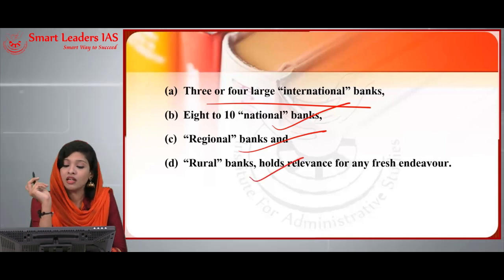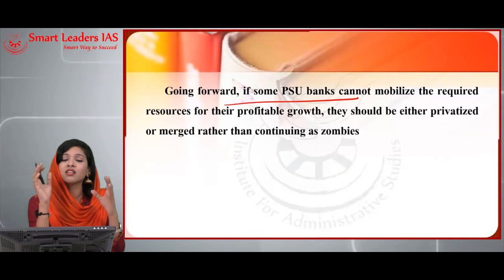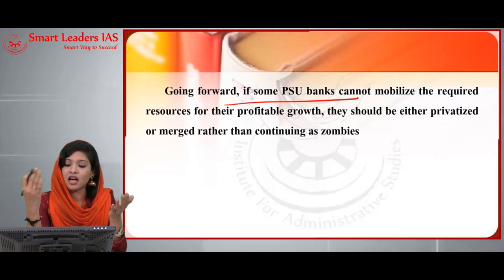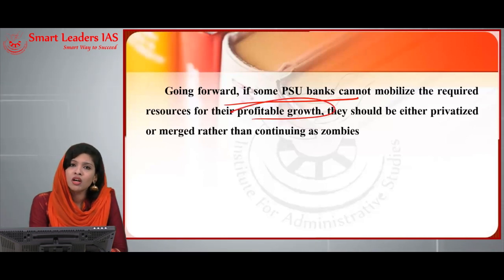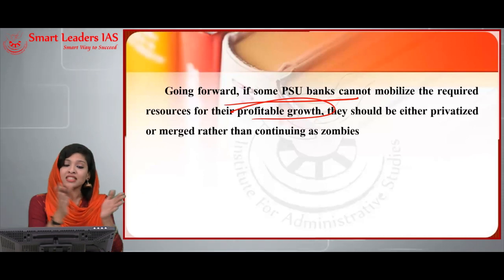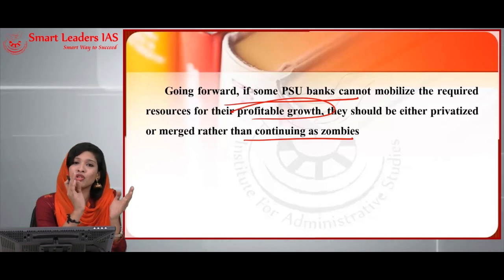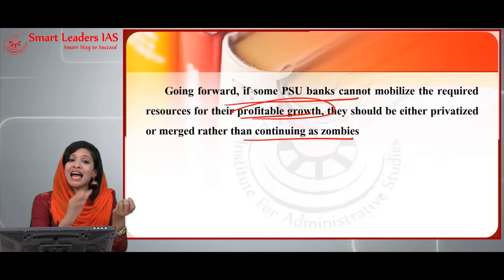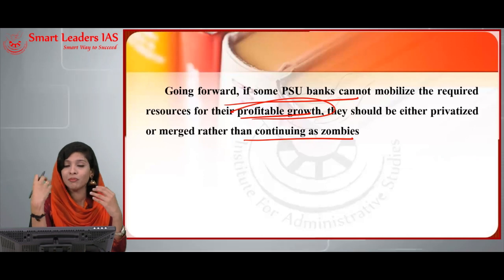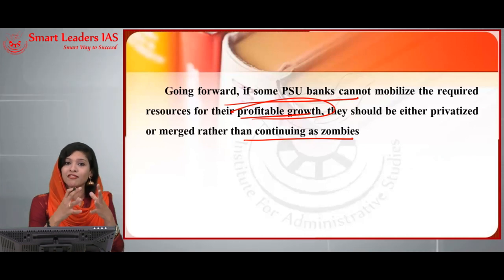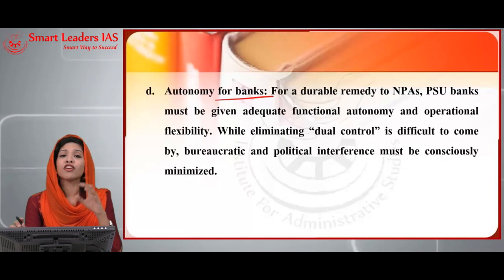Now, the major banking sector reforms: first is consolidation. India still needs public sector banks, but not so many. The banking structure outlined by the Narasimha Committee consisted of three to four large international banks, eight to ten national banks, regional banks, and rural banks. Going forward, if some public sector banks cannot mobilize the required resources for profitable growth, they should either privatize or merge with larger banks rather than continuing as zombies.